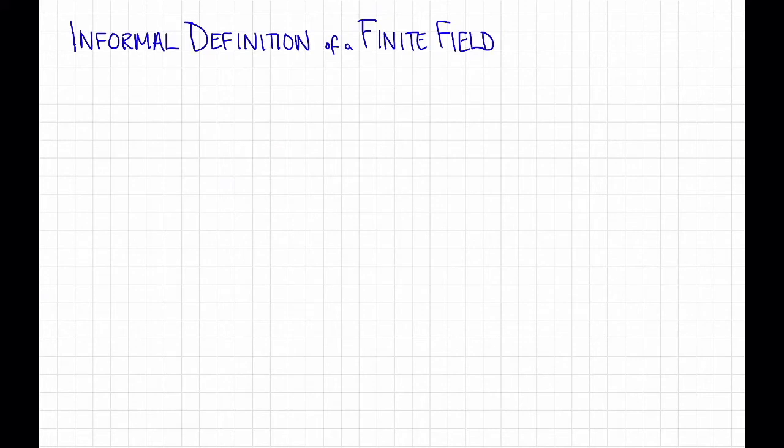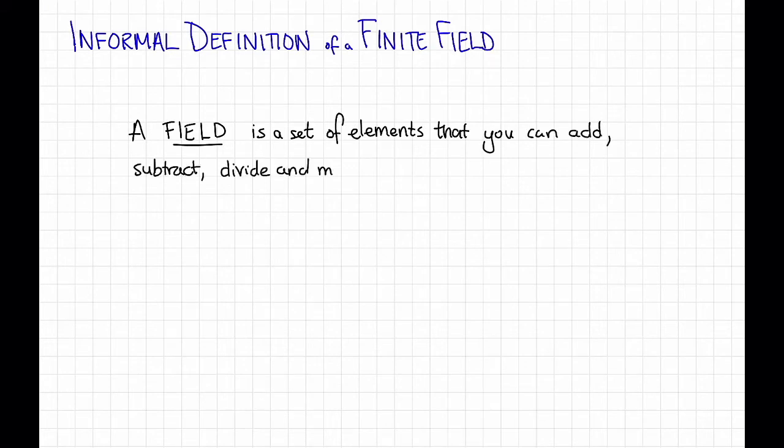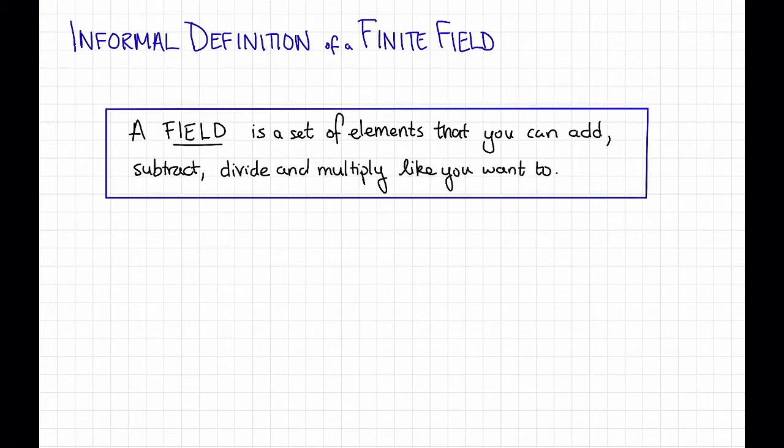Let's start with an informal definition of a finite field, or actually an informal definition of a field first. Informally, a field is a set of elements that you can add, subtract, divide, and multiply like you want to. That's a pretty informal definition. We'll get to a formal one in a moment.